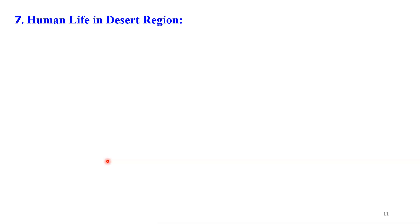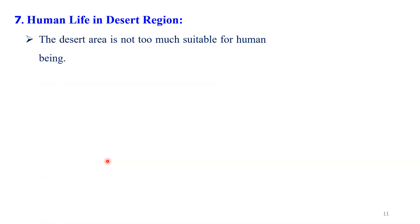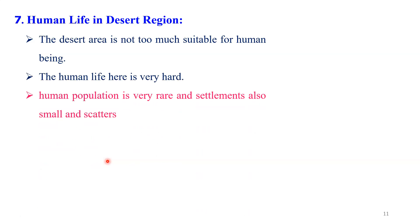Let us discuss the human life that we observe in the desert region. The desert area is not too much suitable for human beings. The climatic and physiological conditions are not suitable for human settlement and human occupation. Therefore, we observe very less human settlement in the desert region. Human life here is very hard. Human population is very rare and the settlements are small and scattered.